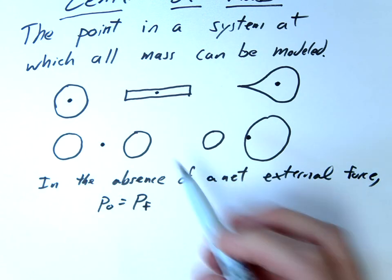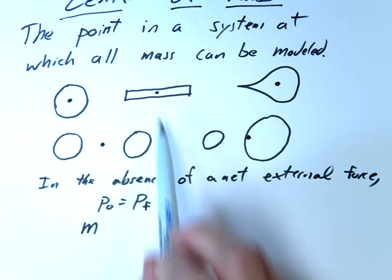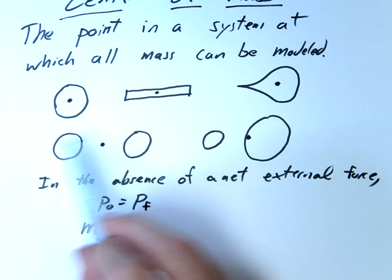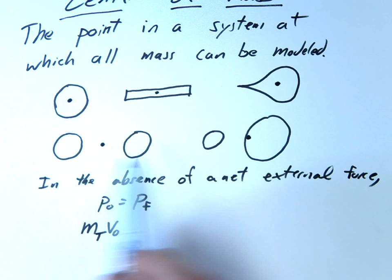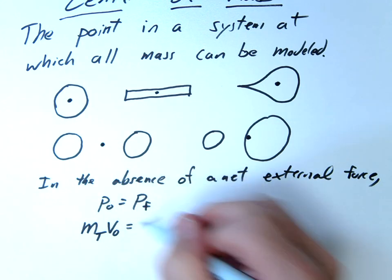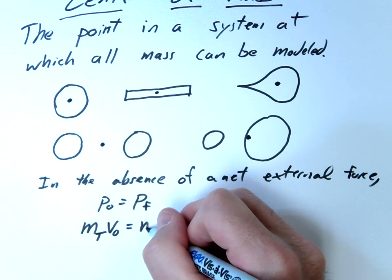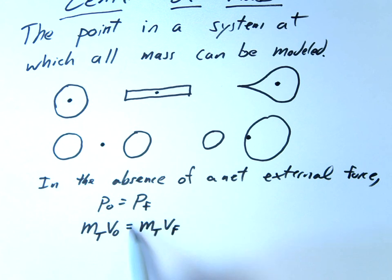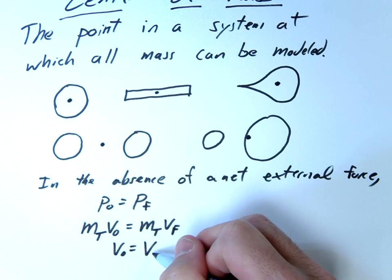Well, notice what happens here. If we take our mass of our entire system, we could just call this our mass total. Well, if our mass total of our entire system times the V initial is equal to the mass of our whole system after our collision or after our explosion times V final, the mass of the system is going to be the same on both sides. So what you're left with is V initial equal to V final.